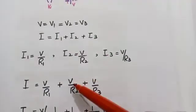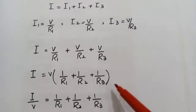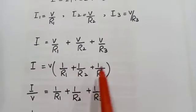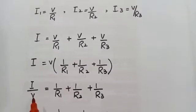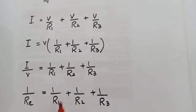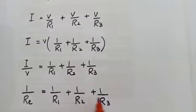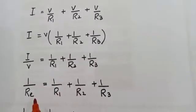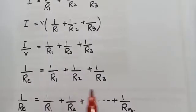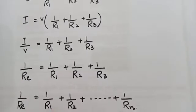Substituting these values, I = V/R1 + V/R2 + V/R3. Taking V as common: I = V(1/R1 + 1/R2 + 1/R3). Dividing both sides by V gives 1/R = 1/R1 + 1/R2 + 1/R3. The combined effect of all three resistors is the equivalent resistance. For n resistors, we generalize as 1/R_equivalent = 1/R1 + 1/R2 + ... + 1/Rn.